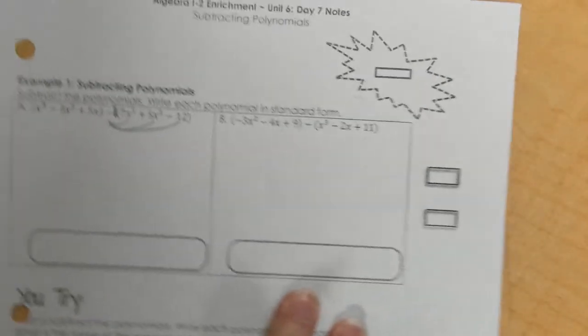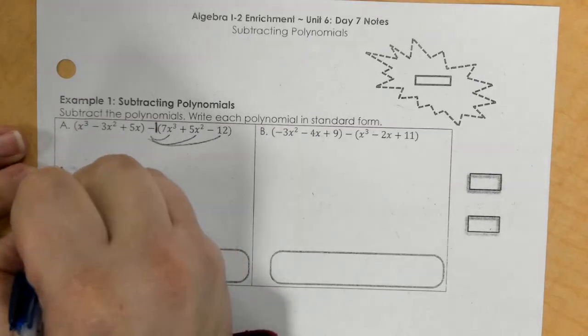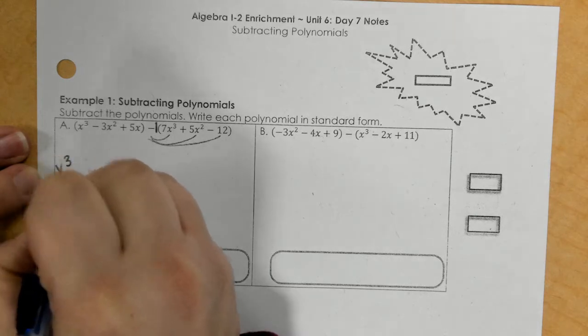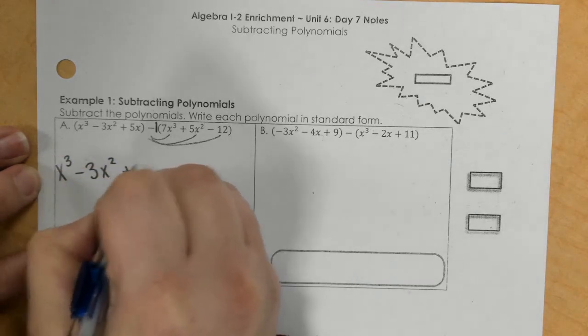So the first part here, the first part, it is going to stay the same. x to the third, 3x squared, and 5x.